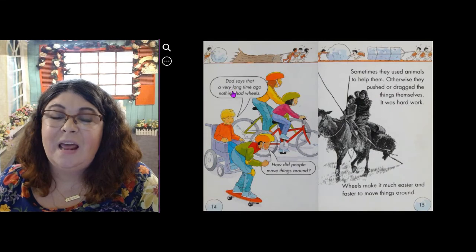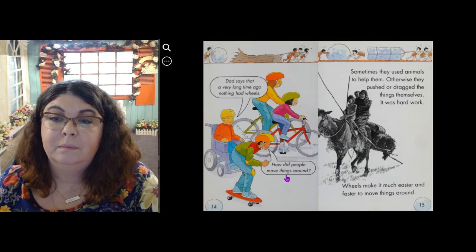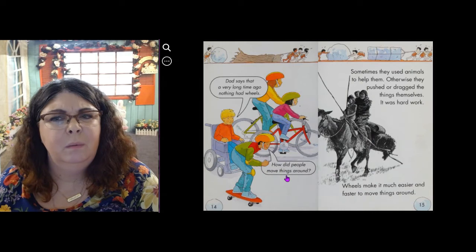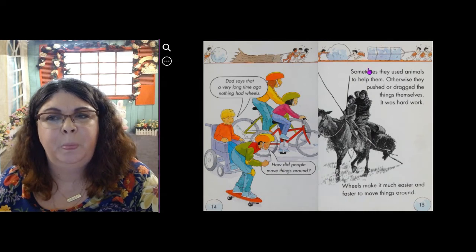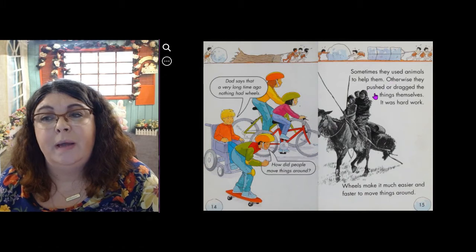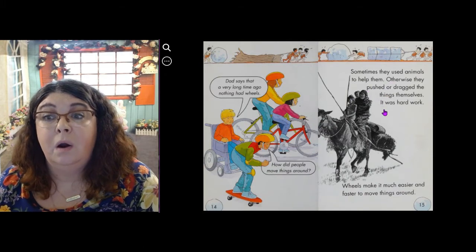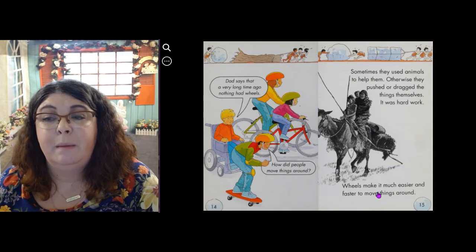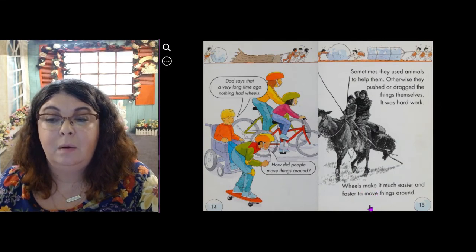Dad says that a very long time ago, nothing had wheels. How did people move things around? Sometimes they used animals to help them. Otherwise they pushed or dragged the things themselves. It was hard work. Wheels make it much easier and faster to move things around.